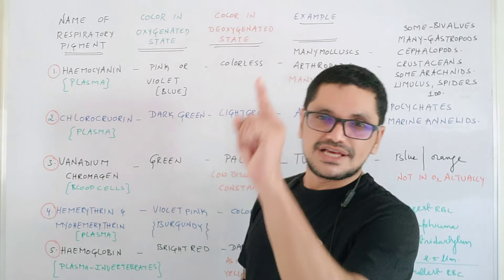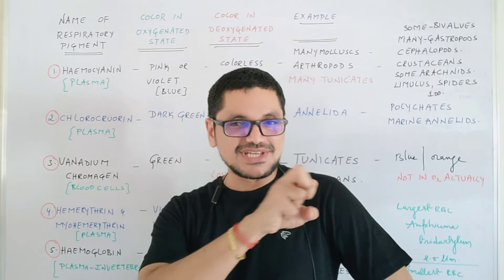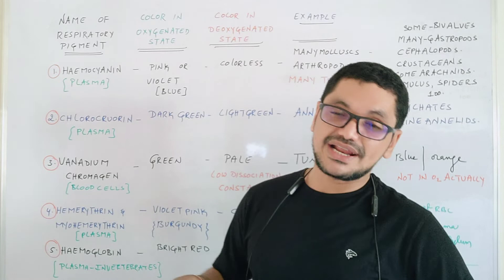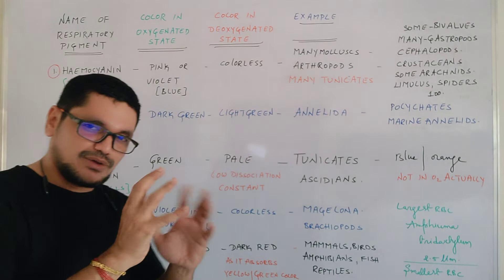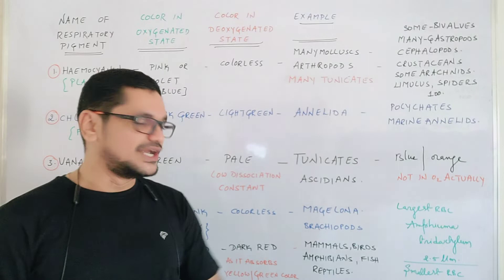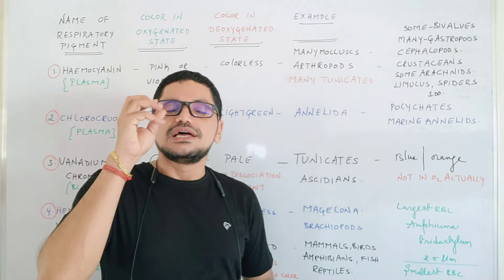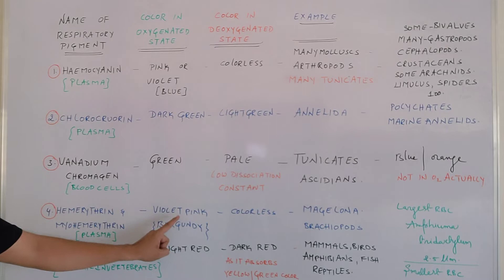The next pigment is hemerythrin, also called myohemerythrin. These two are respiratory pigments also present in plasma. In the oxygenated state the coloration is violet-pink, something like a burgundy color with a brownish shade. In the deoxygenated state it is generally colorless. It is present in Magelona, which is an annelid, and also in brachiopods. So in Magelona and brachiopods, the blood coloration is violet-pink.